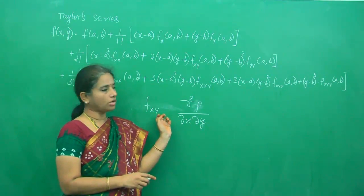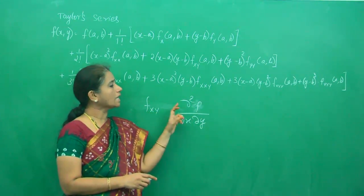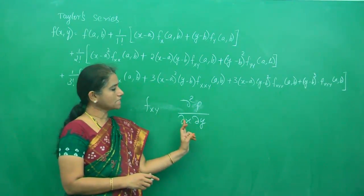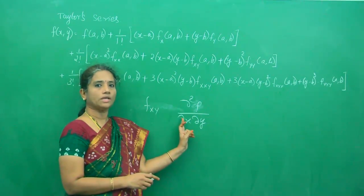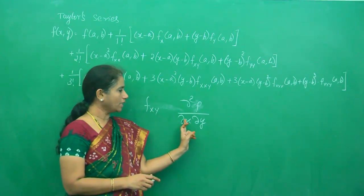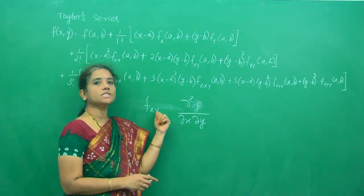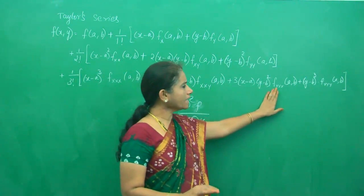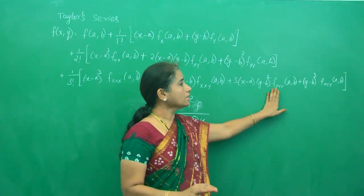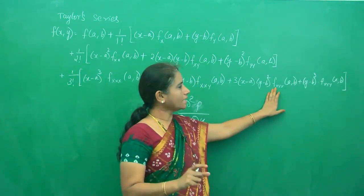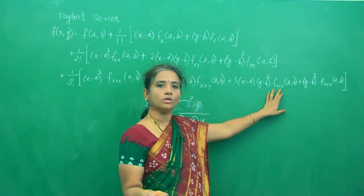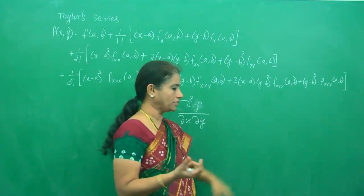But when it is given as a suffix, the order should be followed from left to right. But when it is given in the form ∂²f/∂x∂y, you will be doing ∂y first and ∂x next. So you must be careful about this. Whenever the suffix form comes, follow the order. When ∂²f/∂x∂y comes, derivative with respect to y will be done first, then with respect to x. But in the suffix case, derivative with x will be done first, then we differentiate with respect to y. And f_xyy means: differentiate with respect to x, then that answer differentiate with respect to y, then differentiate with respect to y once again.